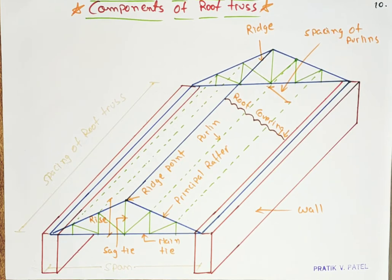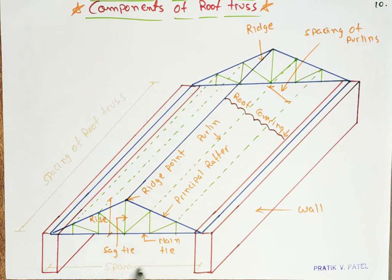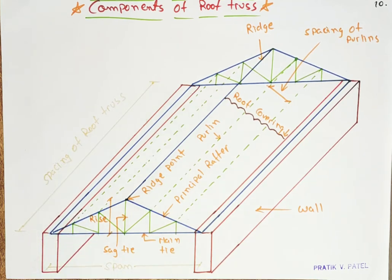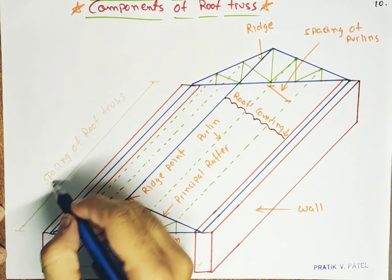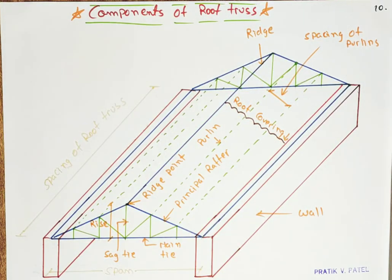So it is the boundary of a roof where I have labeled everything with this orange sketch pen and dimensions are given with this skin colored sketch pen. So this becomes the span of the roof truss and this becomes the spacing of the roof truss.